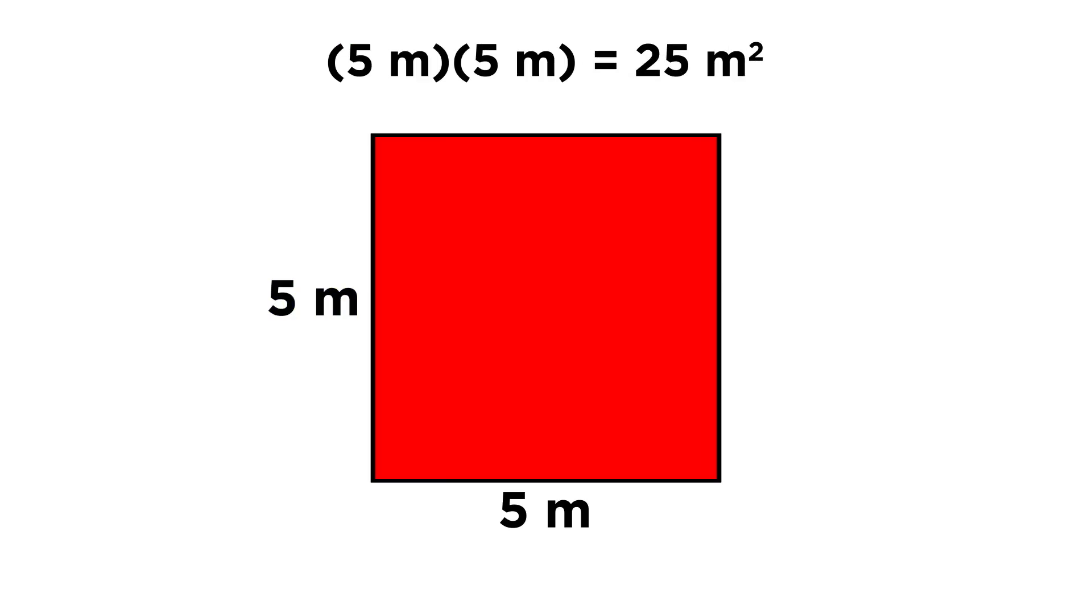Five meters times five meters gives us twenty-five meters squared. We must remember that units will be manipulated just like algebraic variables, so meters times meters is meters squared, just the way that x times x is x squared.